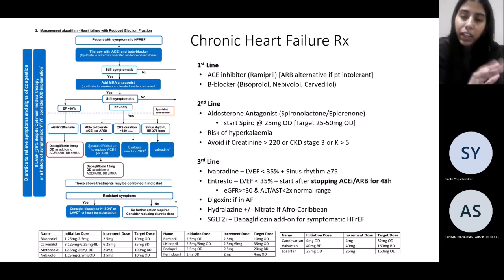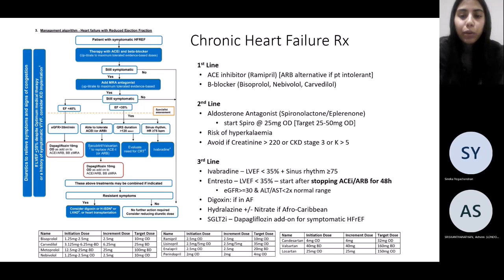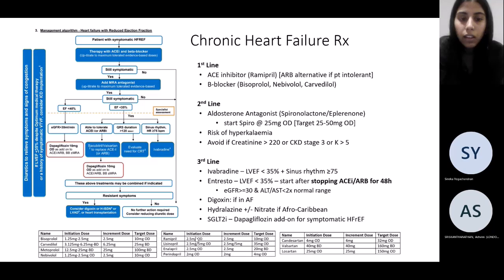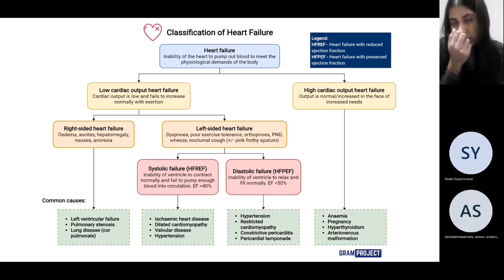Third line, which is more specialist: for HFrEF — heart failure with reduced ejection fraction — Entresto is a popular choice to add on. Entresto is sacubitril and valsartan, and valsartan is an ARB, so there's a 48-hour washout period — stop the pre-existing ACE inhibitor or ARB before starting. For Afro-Caribbean patients, hydralazine and nitrate often works better, and for those with diabetes, dapagliflozin or empagliflozin are now very popular options.